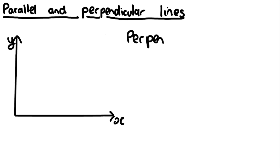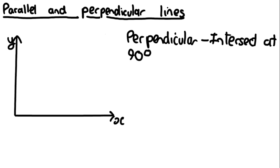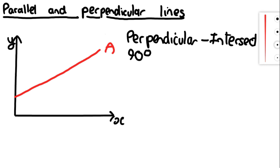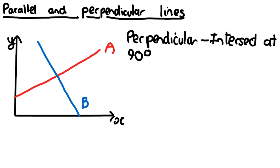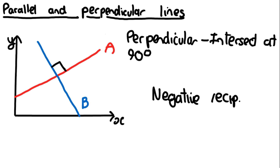Now let's move on to perpendicular lines. Perpendicular lines are lines that intersect at an angle of 90 degrees. So if line A looks something like this, and line B is perpendicular to line A, then line B will intersect it, and the point at which they intersect will form a 90-degree right angle.